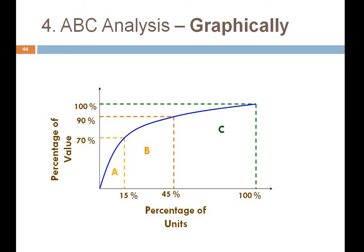This is also shown in a diagram with two axes — percentage of units on one axis and percentage of value in terms of money on the other. The graph shows that 15% of quantity results in 70% of value. The next 30% in quantity (cumulative 45%) contributes up to 90% of value. The remaining 55% of quantity contributes only the last 10% of value.